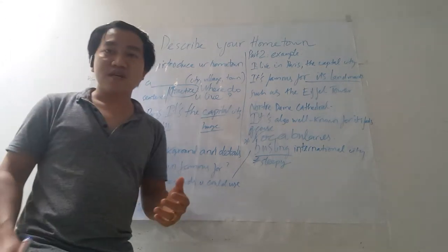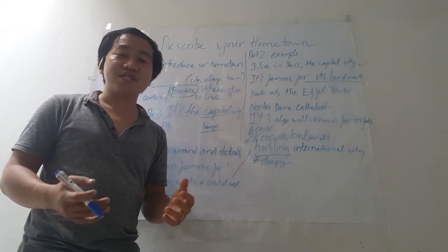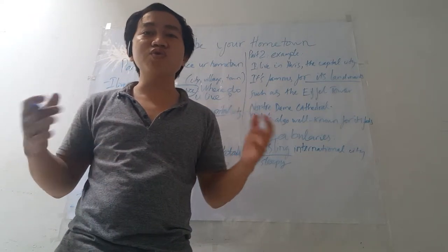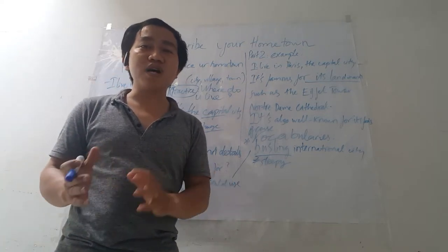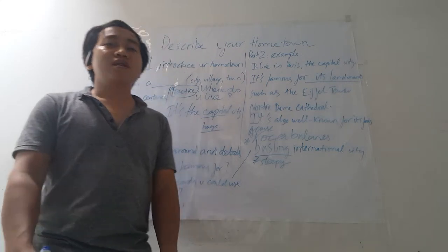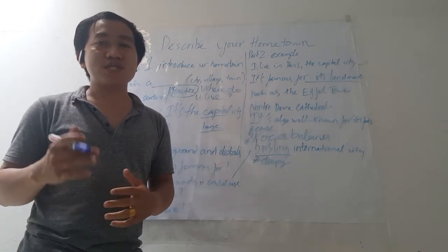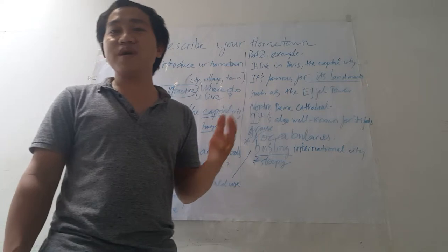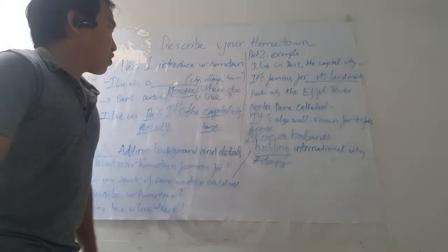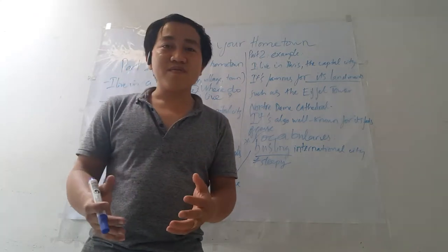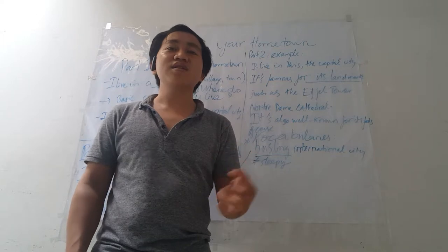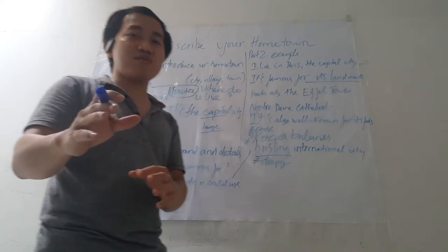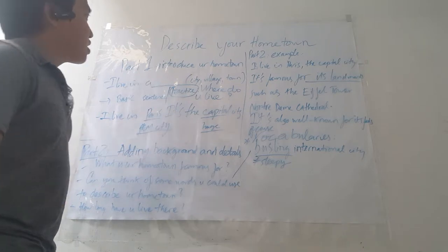Think about how big your hometown is. You could say: I live in Paris — it's a capital city. I live in Shanghai — it's a huge city. I live in Montgomery — it's a small town. I live in Madagascar, which is a tiny village. You should always try to add more detail when you speak. Pause the video and practice your own version.